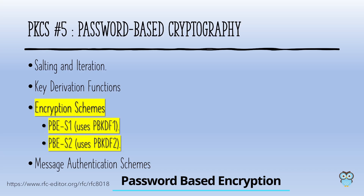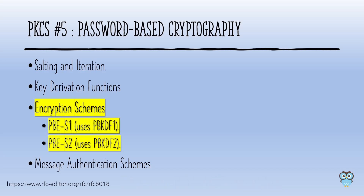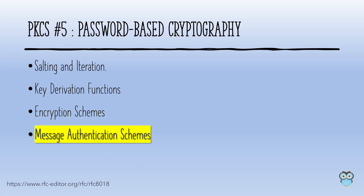PKCS#5 describes PBE, or Password-Based Encryption scheme, where the password is used to derive a secret key that is then used for encryption. There are two types: PBES1 and PBES2 — the only difference is the key derivation function used. PBES1 uses PBKDF1 and PBES2 uses PBKDF2. PKCS#5 also describes a message authentication scheme where the secret key for calculating MAC is derived using PBKDF2.